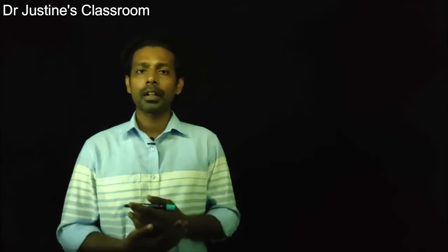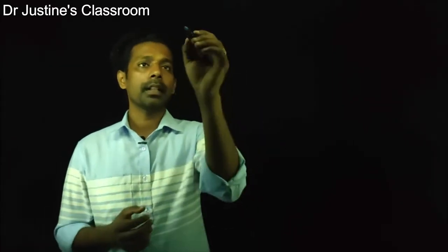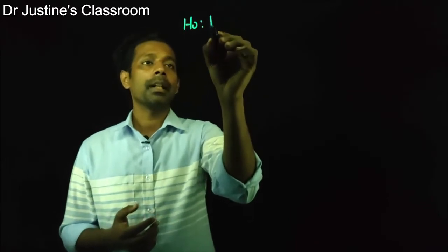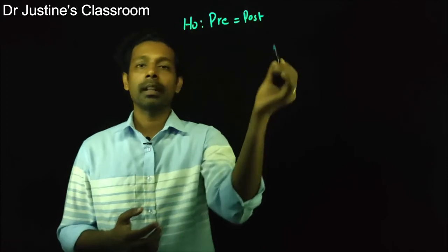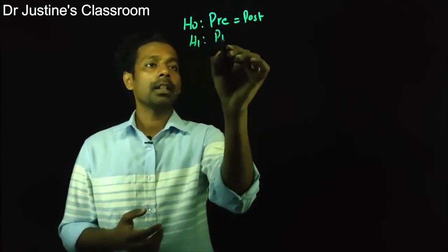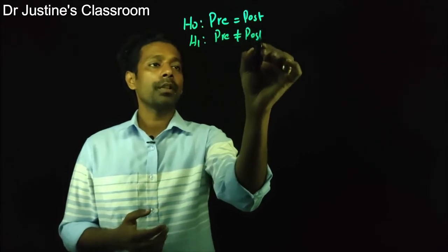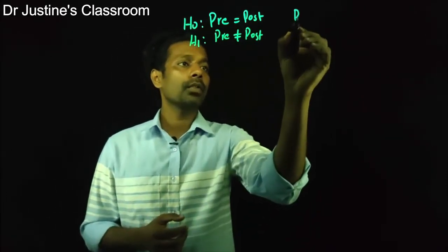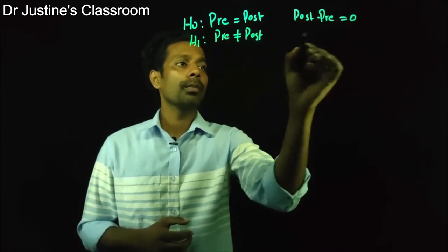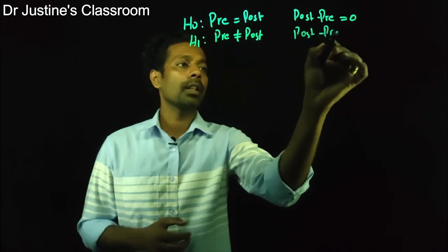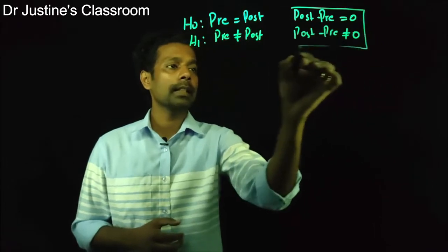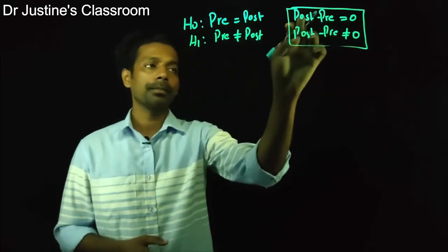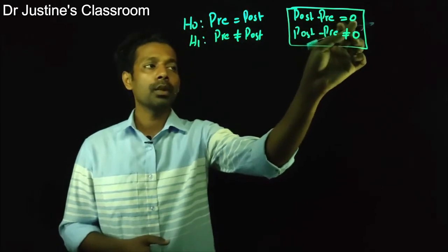For example, happiness before and after relaxation training. What is the hypothesis? We take a null hypothesis here. The research hypothesis would be that pre-test equals post-test, and the alternative hypothesis would be that pre-test is not equal to post-test. More precisely, the statistical hypothesis is: post-test score minus pre-test score equals zero (null), or post-test score minus pre-test score is not equal to zero (alternative). This is the statistical hypothesis we consider.